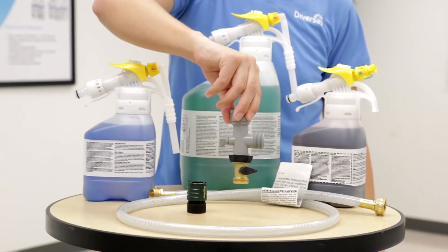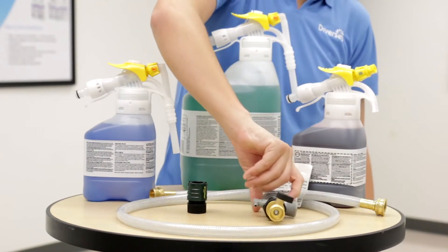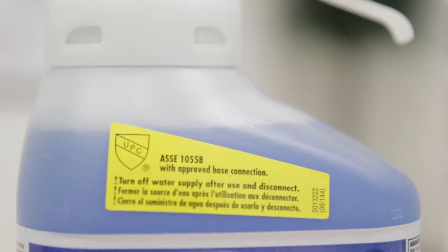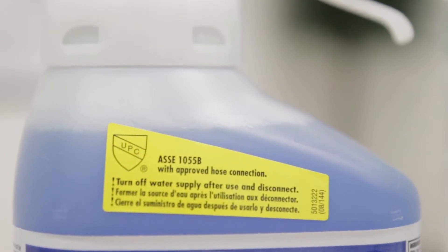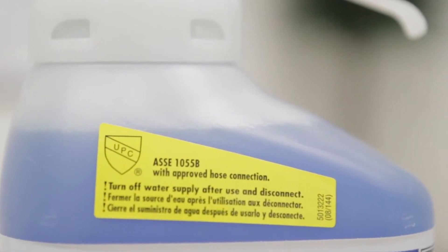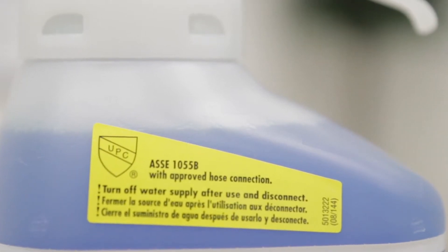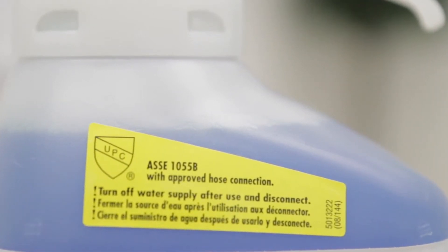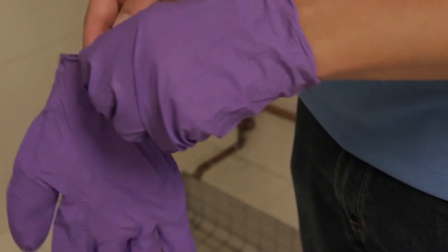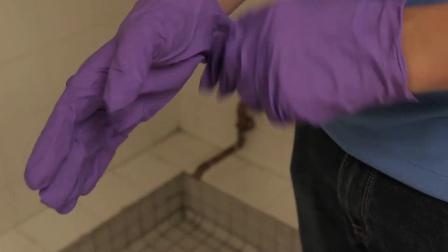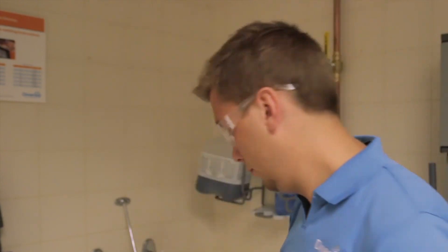When the RTD hookup kit is installed correctly, the RTD dispensing system is ASSE 1055B approved to prevent chemical backflow. Check local regulations to verify requirements for your area before installing. Be sure to wear the proper personal protective equipment outlined in the SDS. For this demonstration, we will be wearing gloves and goggles.